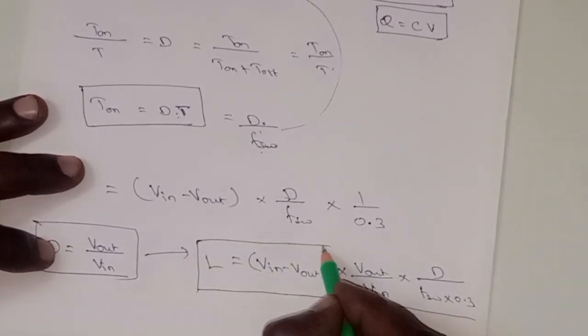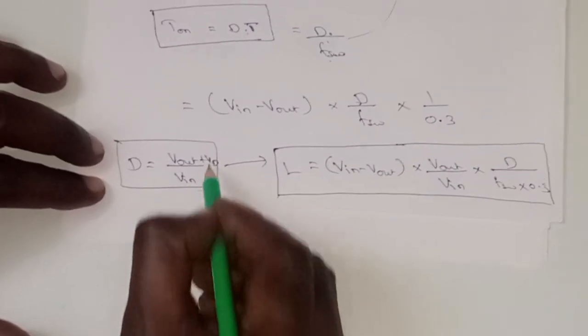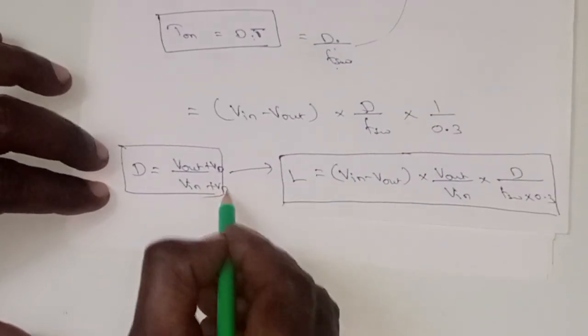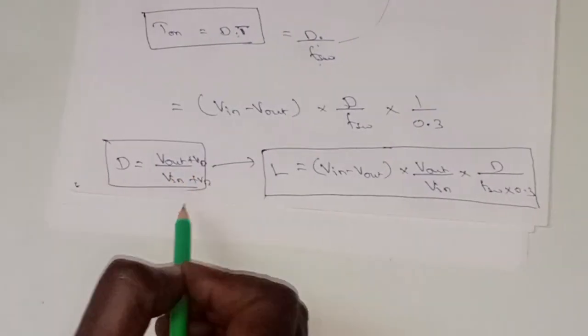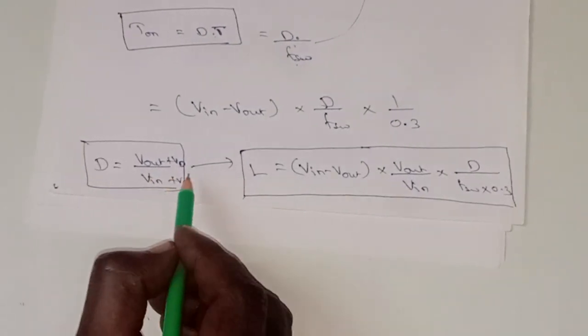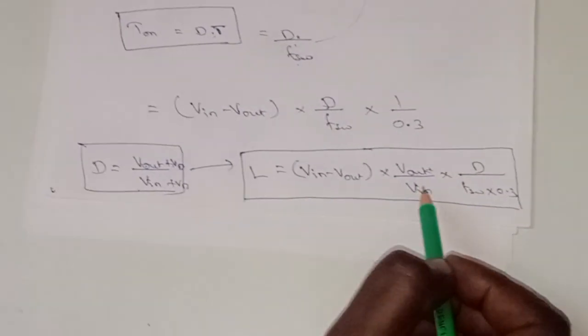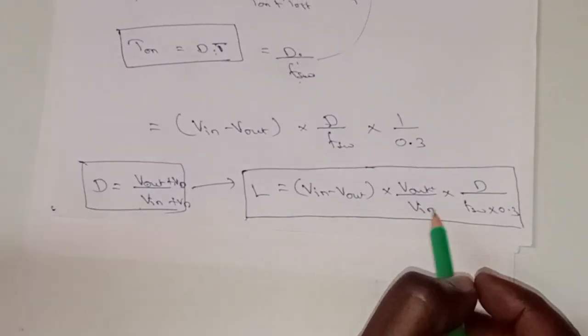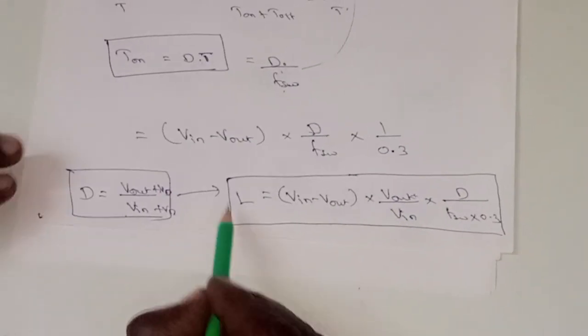See, in some of the textbooks, you might have seen that they will add the drop across the diode also. That means duty cycle will be VOUT plus Vd value, VIN plus Vd - this will come. So this is if we are going to use a Schottky diode only, right? So that will be 0.3 voltage. Adding of the 0.3 voltage, they will add this also. But that looks like a more complicated formula. But this is the ultimately exact formula for this one.